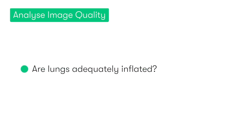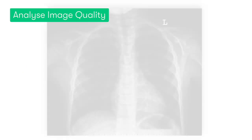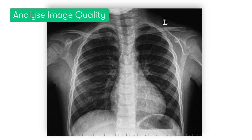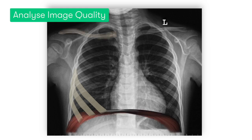The first thing to look for is whether the lungs are adequately inflated and that we are able to visualise the maximum amount of lung tissue. In an adequately inflated chest, either the fifth, sixth, or seventh anterior ribs should cross the diaphragm along the mid-clavicular line. So in this case, we can say that the chest is adequately inflated.